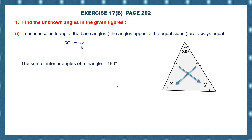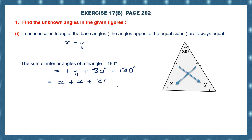The sum of the interior angles of a triangle is 180 degrees. The interior angles of this triangle are x, y, and 80 degrees. So x plus y plus 80 degrees equals 180 degrees. Since x and y are equal, I can write x plus x plus 80 equals 180 degrees, so 2x plus 80 equals 180 degrees.